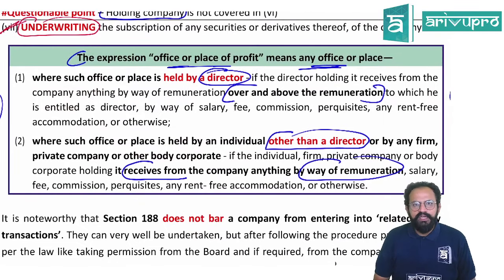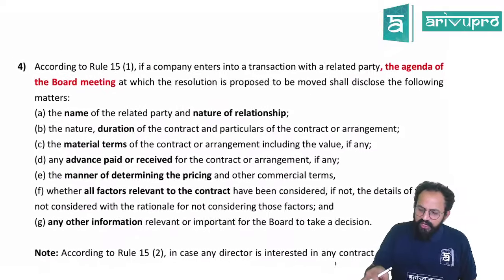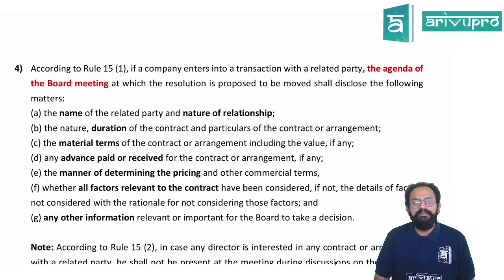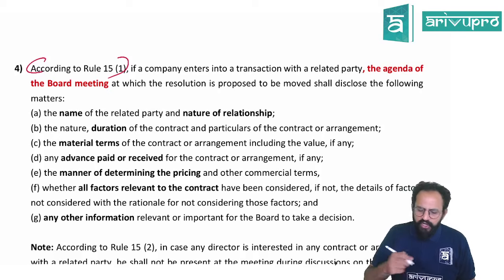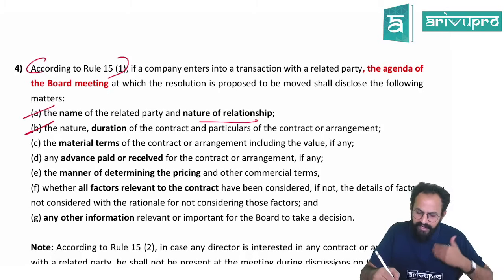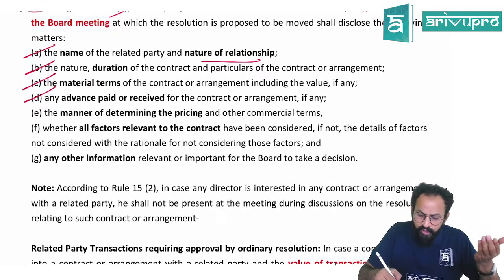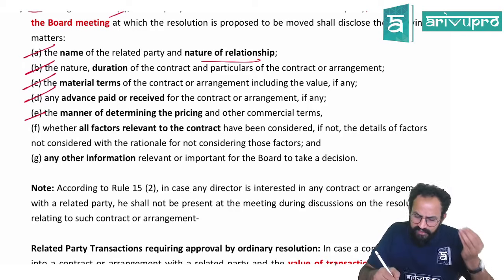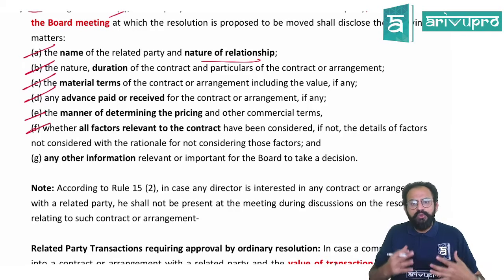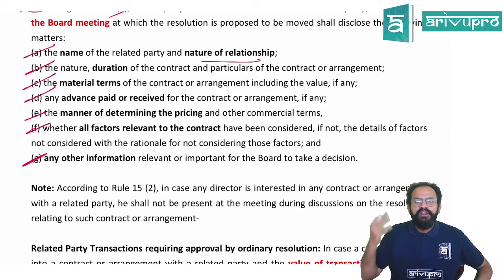When calling the board for a meeting under Rule 15, you need to make sure you give certain things in the agenda: name of the related party, nature of the transaction, duration, material terms, whether any advances have been paid, how the price was arrived at, factors considered for entering into the contract, and any other information for decision-making.